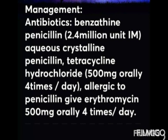In management, the patient should be given benzathine penicillin 2.4 million units IM, or aqueous crystalline penicillin. For patients allergic to penicillin, tetracycline hydrochloride 500 mg orally four times a day for 15 days, or erythromycin 500 mg orally four times a day for 15 days can be given. Treponema pallidum disappears from infectious lesions within 24 hours of instituting therapy. In follow-up, the VDRL test should be repeated at 1, 3, 6, 9, 12, 18, and 24 months. At the end of 24 months, if VDRL is negative, the patient is considered cured.